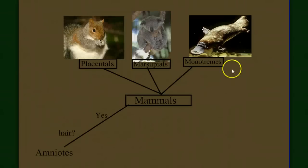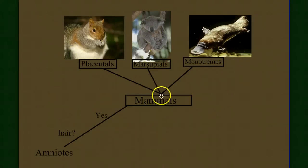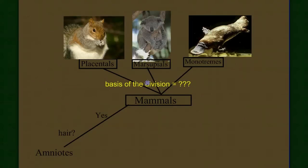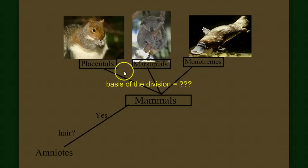Those are the general mammal characteristics. What we have left to do is look at the three subgroups — the monotremes, the marsupials, and the placentals — and see what makes each of these subclasses different from each other. It turns out the basis of this division has to do with the reproductive event, or the birth event.